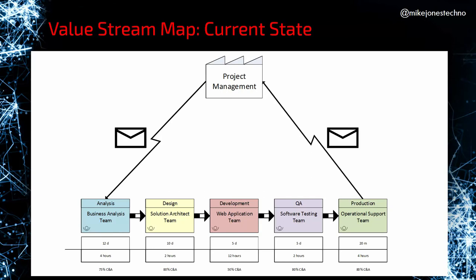I want to move on and talk more about how to run the workshops to get a successful value stream. These are numbers I've made up because every team will be different. The value in a value stream map is the conversation you have trying to draw it out — what does it mean for your team, your company, your organization? I'd like to have more conversation about how to run the sessions and guide teams to come up with the right numbers, metrics, and decisions to make them better.